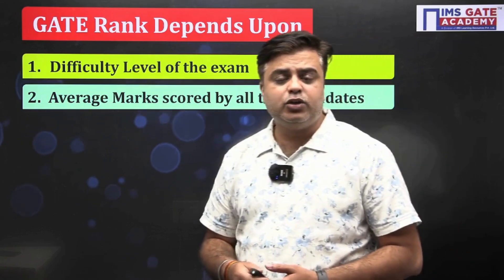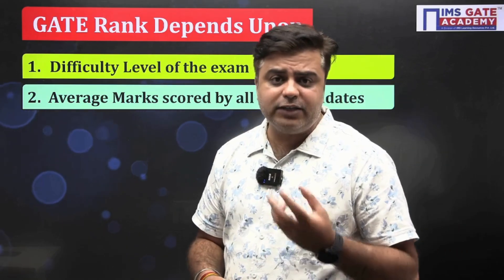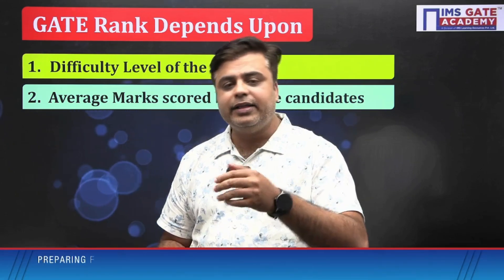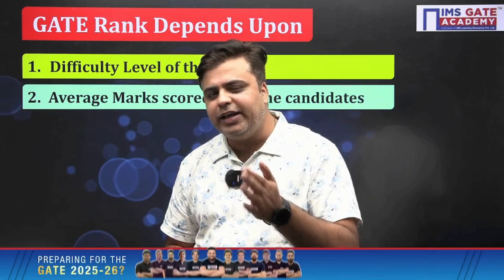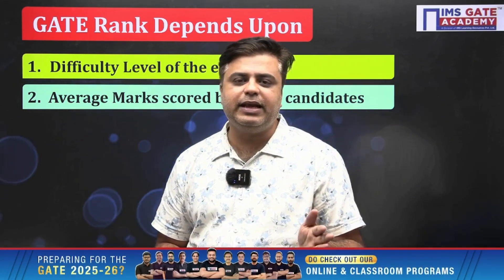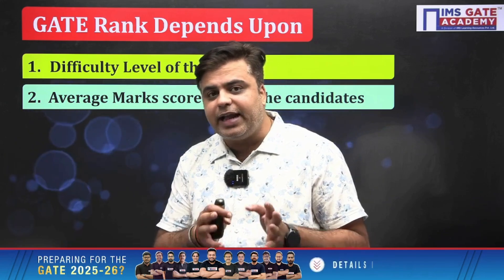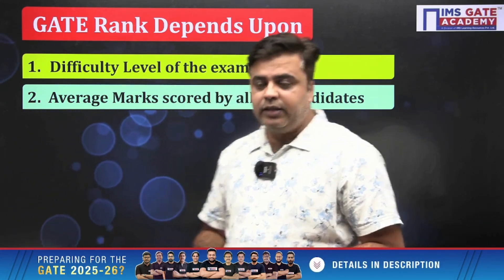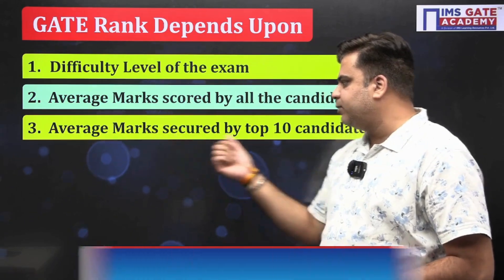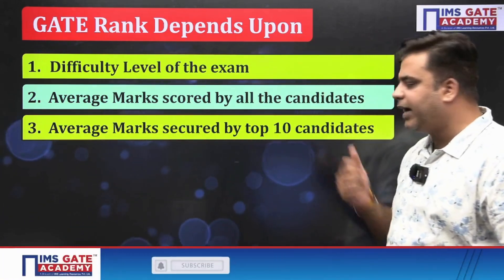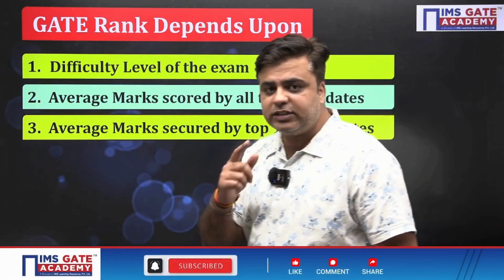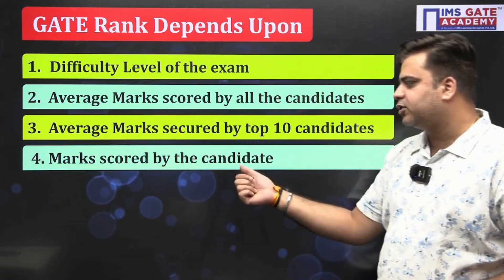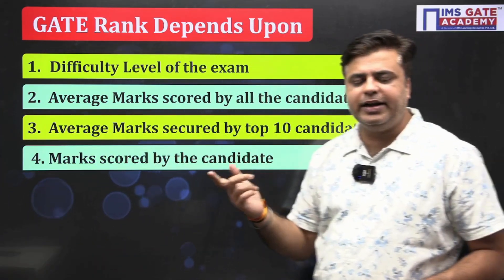The second parameter is the average marks scored by all the candidates. If the average marks scored by all candidates are on the higher side, then your GATE rank might be lower, so you need to score really well. The third parameter is the average marks scored by the top 10 candidates, and the fourth is the marks scored by the individual candidate.